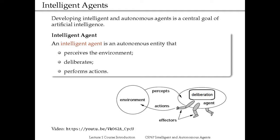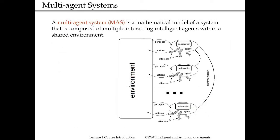Our focus is really on the deliberation step where information is received, processed, and then decisions are made to send to the effectors. In real-life applications, there are not a lot of scenarios where we see an individual agent functioning by itself. In many actual industrial applications, we have multiple agents sharing the same environment, and my part of the course will be really focusing on this type of scenario.